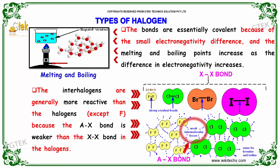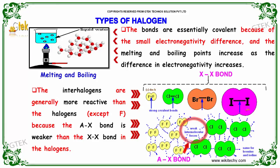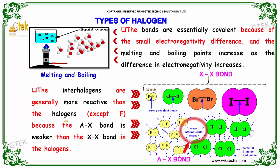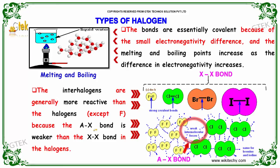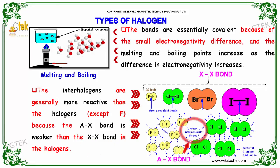The interhalogens are generally more reactive than the halogens — F₂, Cl₂, Br₂, or I₂ — except for fluorine. They are generally more reactive because the A-X bond is weaker than the X-X bond in the halogens.